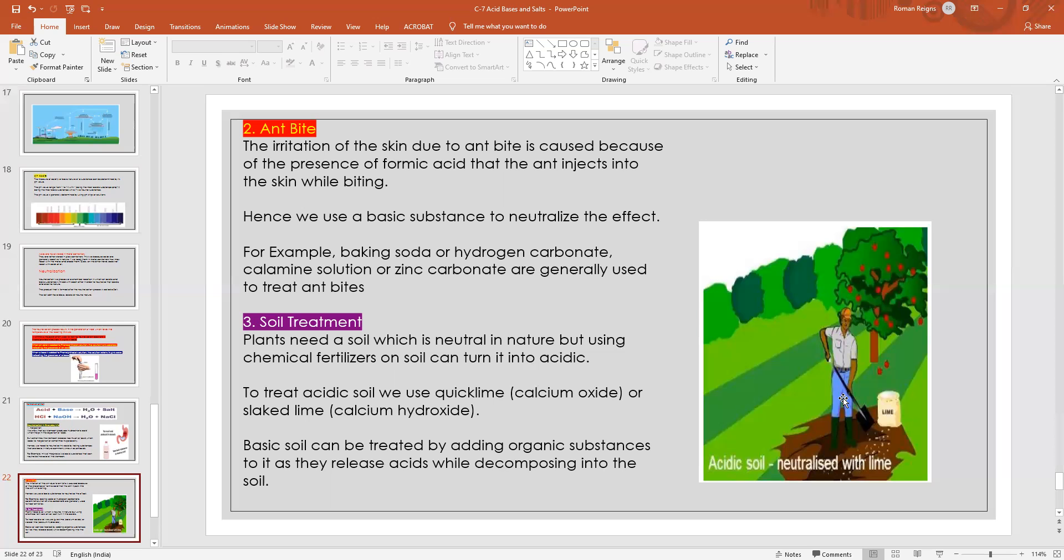What acid? We need a mild acid. We can't throw lots of lemons or curd on the field, so what we can do is use organic manures. Organic manures are rich in acids. When we add them, they will turn the soil neutral. This way, neutralization reaction is very useful in the daily life of human beings.